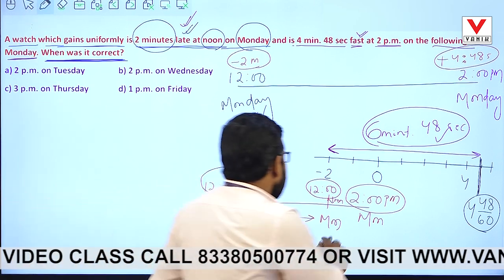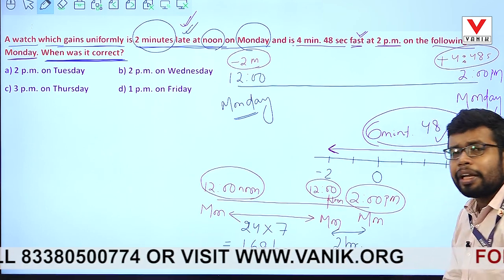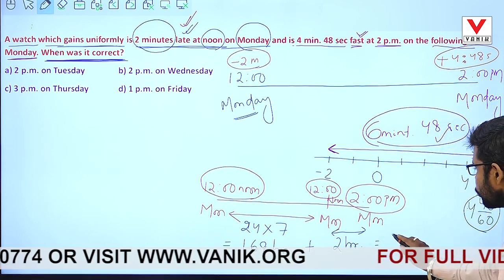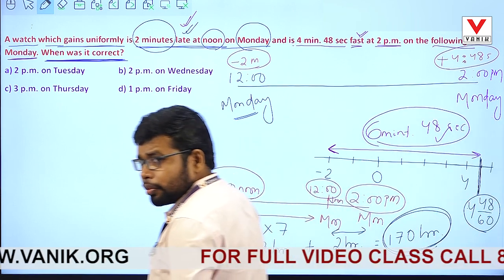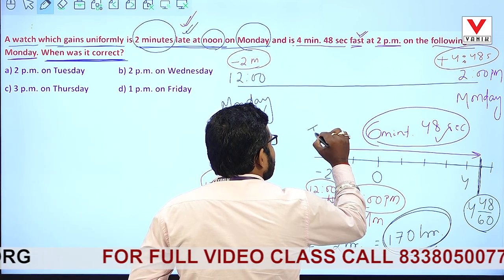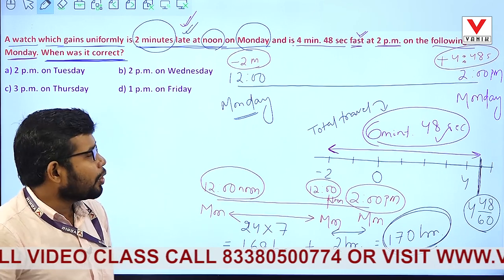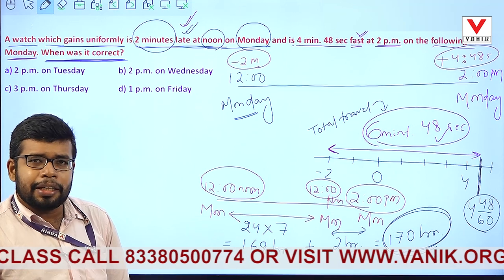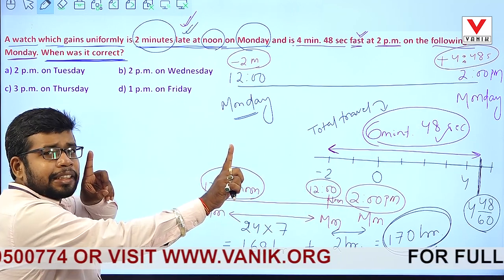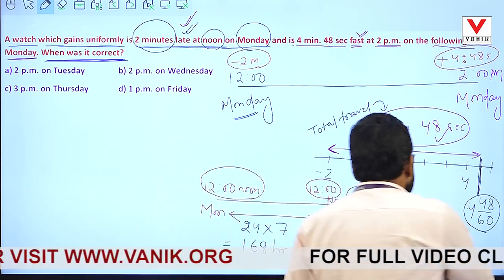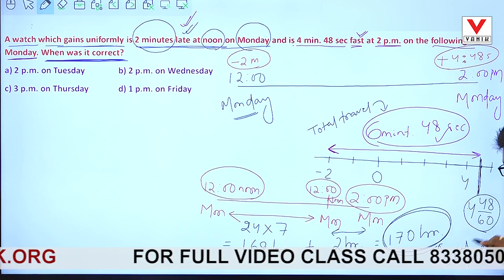So now I have three things: the total distance traveled by the watch is 6 minutes 48 seconds — from minus 2 (late) to plus 4 minutes 48 seconds (fast). The total time taken for this entire journey is 170 hours. Now using these, I can find when the watch was correct.